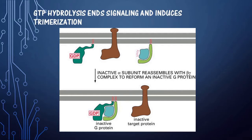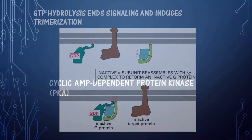GTP has been converted to GDP, and the alpha subunit has been inactivated. The GDP-bound alpha subunit and the beta-gamma subunits bind together to form the inactive G protein, and the target protein also remains inactive.